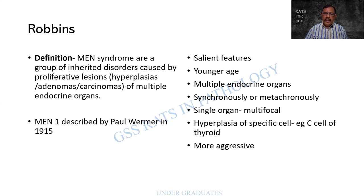Definition: MEN syndromes are a group of inherited disorders caused by proliferative lesions — which might mean hyperplasia, adenoma, or carcinoma — of multiple endocrine organs. So the answer is there in itself: Multiple Endocrine Neoplasia, and that includes hyperplasia also.